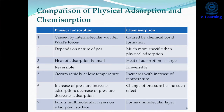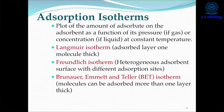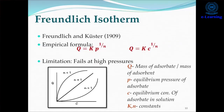In adsorption isotherms, we plot a graph of the amount of adsorbate on the adsorbent as a function of its pressure (for gas) or concentration (for liquid) at constant temperature. The first isotherm is the Freundlich isotherm, given by Freundlich and Küster in 1909. The empirical formula is: q = k·p^(1/n) or q = k·c^(1/n). A limitation of the Freundlich isotherm is that it fails at high pressure.